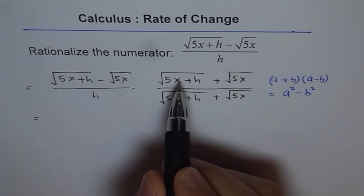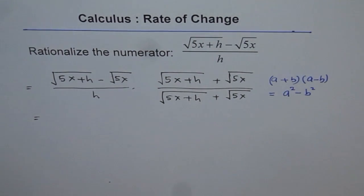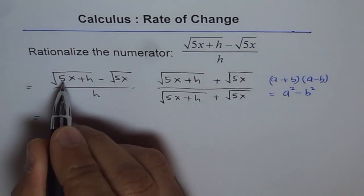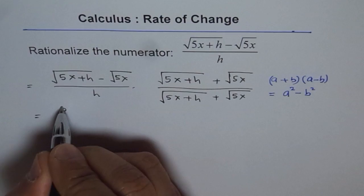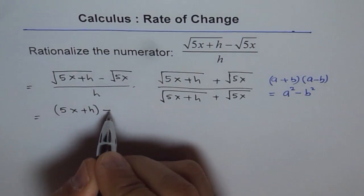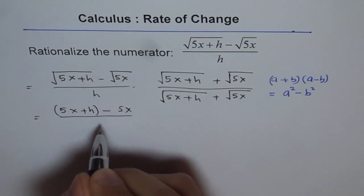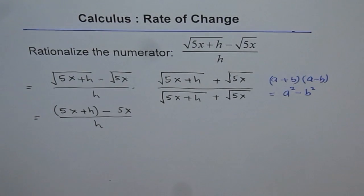So when you square this, what do you get? You get rid of square root. That is how we simplify it. So we get this squared, which is 5x plus h minus square of this is just 5x over h. Do you see that? That is what we get.